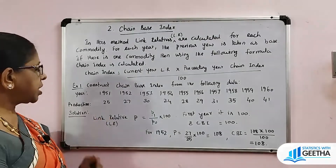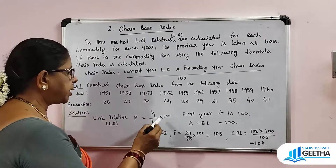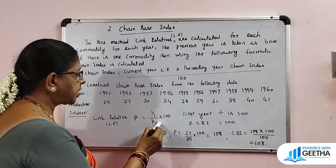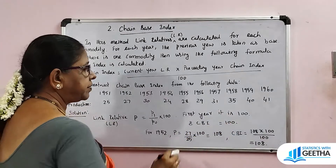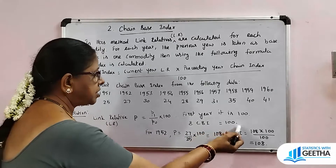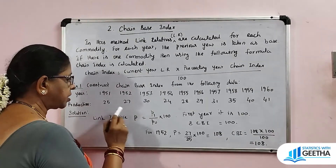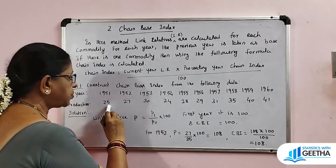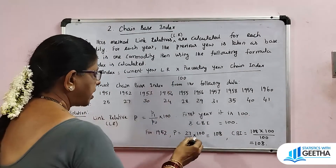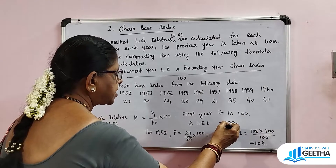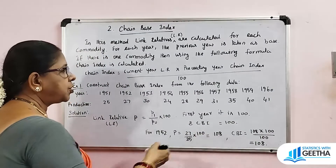For each and every year we calculate the link relative P, denoted by the letter P, which is equal to P1 divided by P0 into 100. P1 is the current year price, P0 is the base year price, multiplied by 100. The base year changes each year. For the first year, the link relative value is 100 and the chain index is also 100. For 1952, the previous year is taken as the base. Link relative P equals 27 by 25 into 100, which is 108. The chain index formula is: current year link relative into previous year chain index divided by 100.